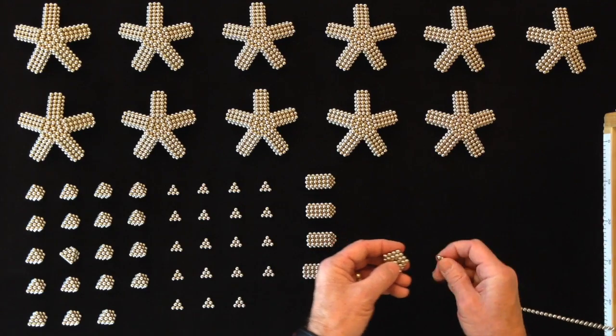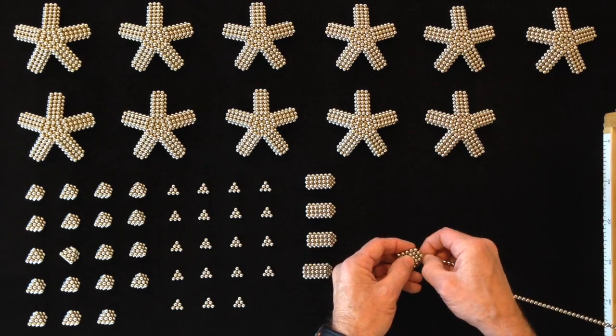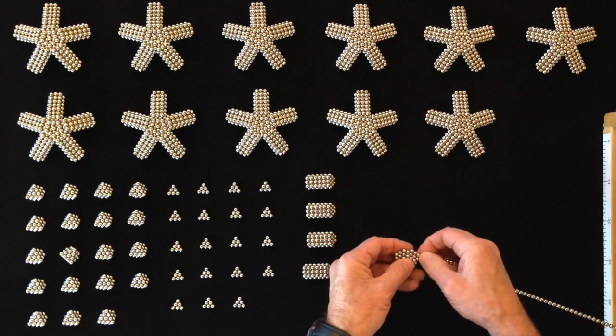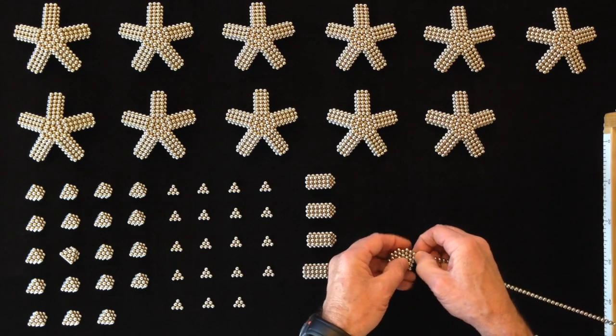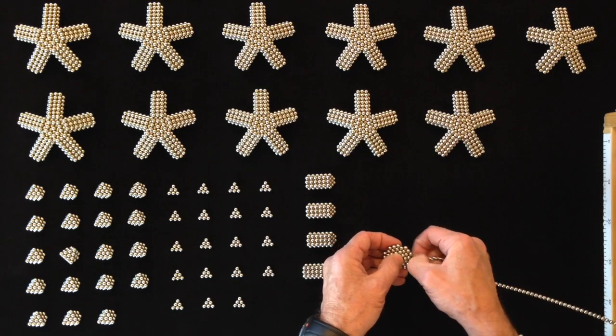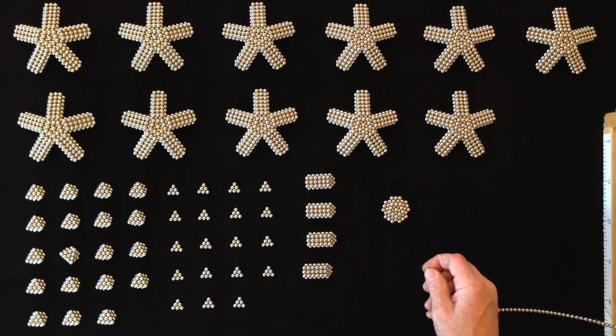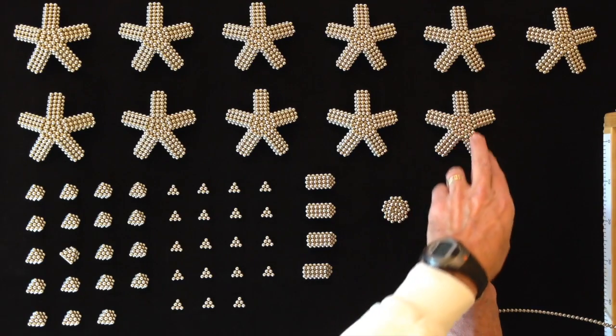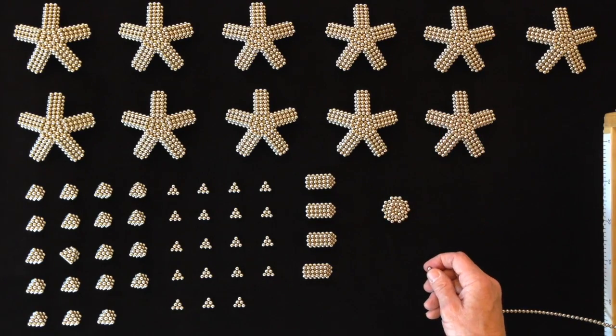Then add three magnets along each side. That's the center body of the starfish.